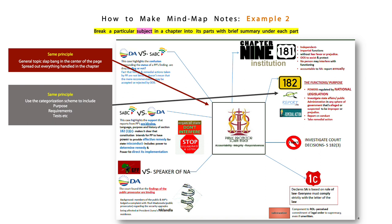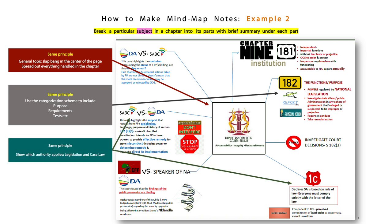Again, the same principle. Use the categorization scheme to include your purpose, your requirements, your tests. Show which authority applies both legislation and case law. You can see she's made it very graphic, because she thinks in terms of pictures. So if you're a person that thinks in terms of pictures, this will work for you.